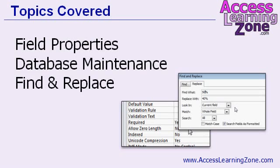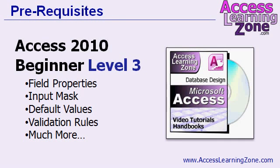In today's class, we will continue our lessons on Field Properties, a topic we started in Level 3. We will also learn about Database Maintenance and the Find and Replace feature. This course follows Access 2010 Beginner Level 3. It is strongly recommended that you watch Level 3 before proceeding with today's lessons.